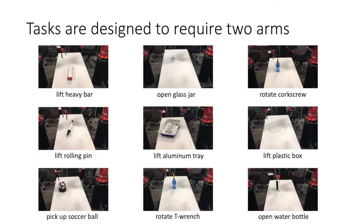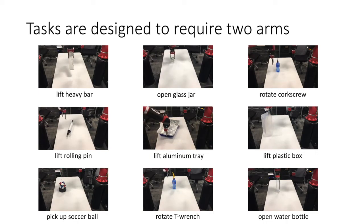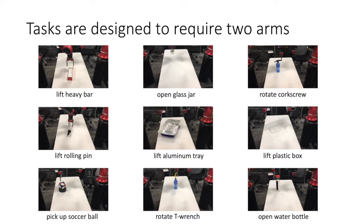Then, we transfer the learned skill sequences to nine real-world bimanual manipulation tasks, given raw camera images as states. All these tasks are designed to require two arms. Here, we show videos of attempting to solve the tasks with just a single arm, which is impossible by design.